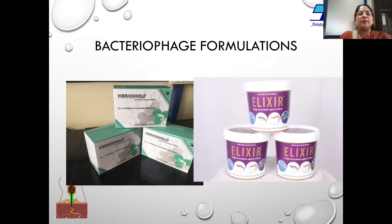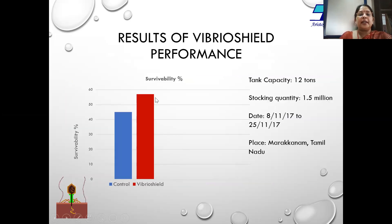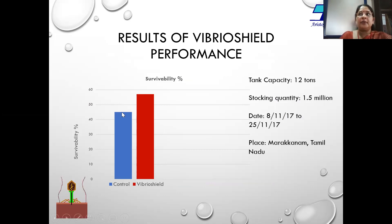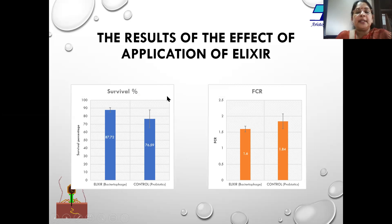Two formulations are available: Vibrio Shield for hatcheries and Elixir for grow-out ponds. Another study again proves that bacteriophages are effectively able to control vibriosis under a hatchery environment. With the blue control using probiotics, survival was around 45 percent, whereas when Vibrio Shield — the bacteriophage — was used, survival was around 57 percent.